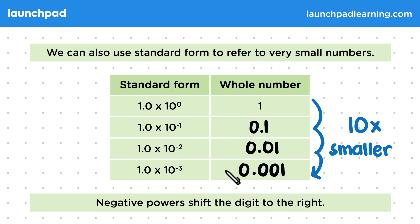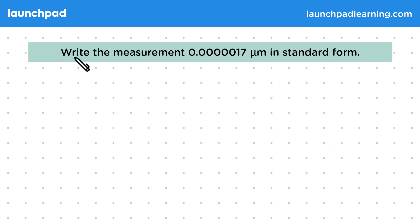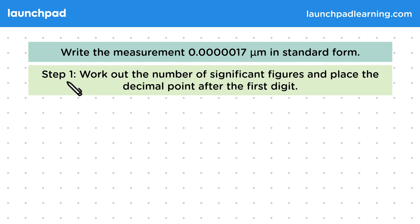So how do we write numbers in standard form? Write the measurement 0.000017 micrometers in standard form. So step 1, work out the number of significant figures and place the decimal point after the first digit. Let's write out our value here. The significant figures in this number are the 1 and 7. When we place a decimal point after the first digit, we get 1.7.